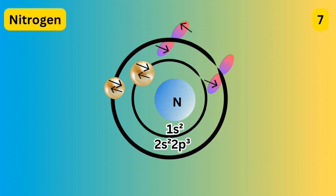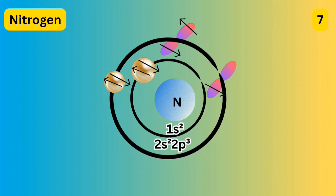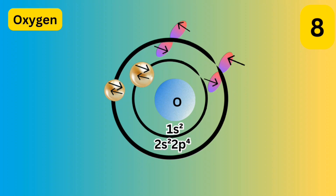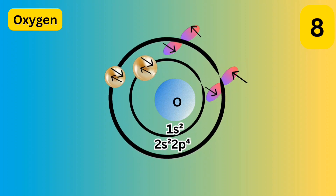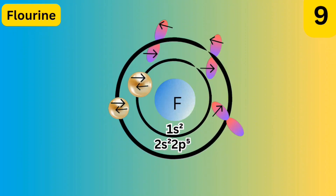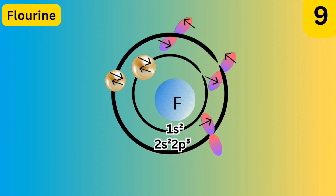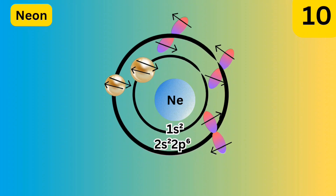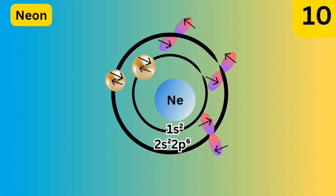There are eight electrons in oxygen, so the electronic configuration is 1s2 2s2 2p4. There are nine electrons in fluorine, so the electronic configuration is 1s2 2s2 2p5. There are ten electrons in neon, so its configuration is 1s2 2s2 2p6.